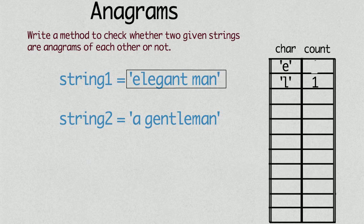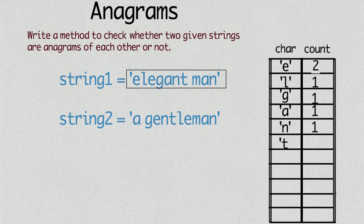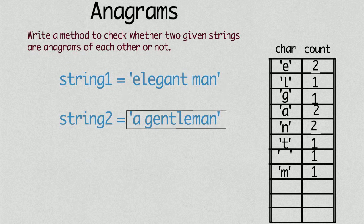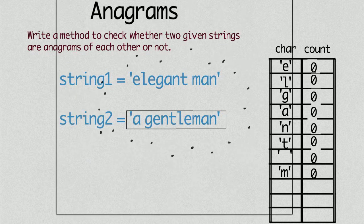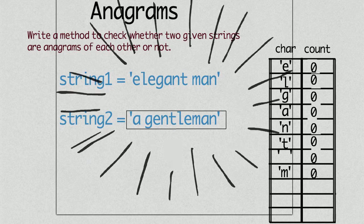We can iterate the first string character by character and store the count of each character in the dictionary. Next, we can iterate the second string and decrement the count of each character stored in the dictionary. In the end, if the count of all characters stored in the dictionary is 0, then we can say that string 1 and string 2 are anagrams of each other.